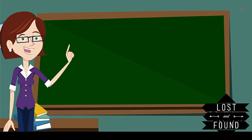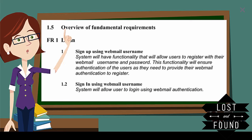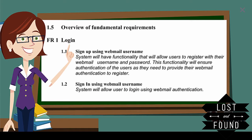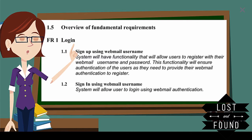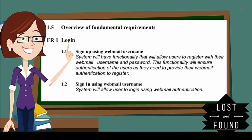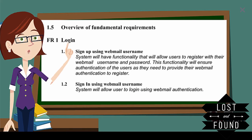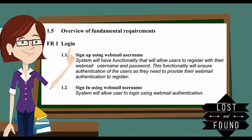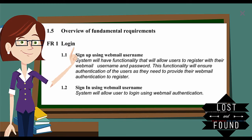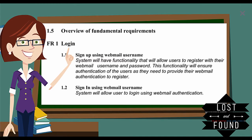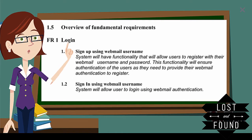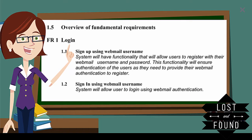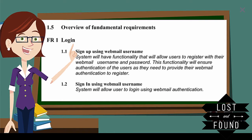We have talked about the problem specification. Now it's time to understand the functional requirements for the lost and found system. In software engineering, a functional requirement defines a function of a system or its component. A typical functional requirement will contain a unique name and number and a brief summary. This information helps the reader understand why the requirement is needed and to track it through the development of the system.